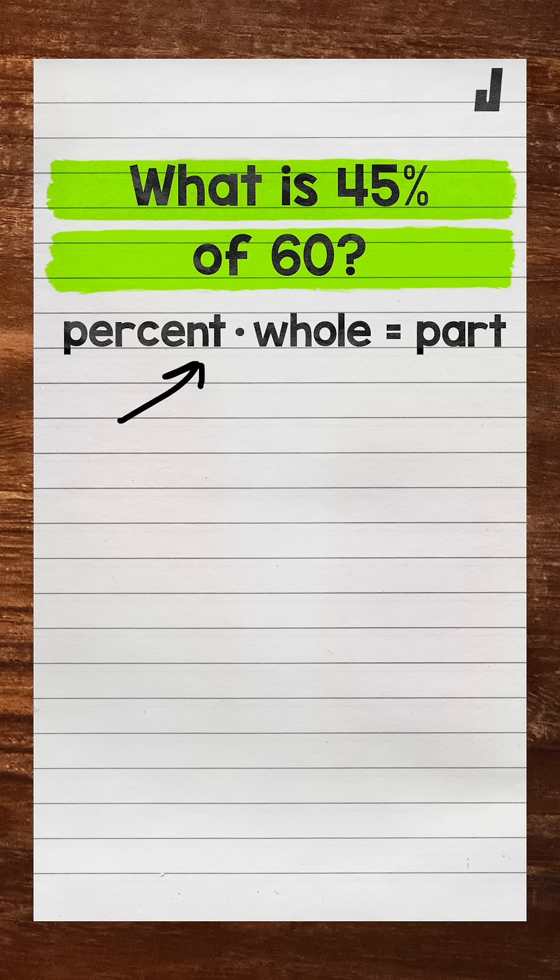We plug in what we are given and solve for what we are looking for. For this example, our unknown is the part. Basically, we're finding what part of 60 is 45% of 60. Let's start by writing the equation using variables, and then we will plug in.